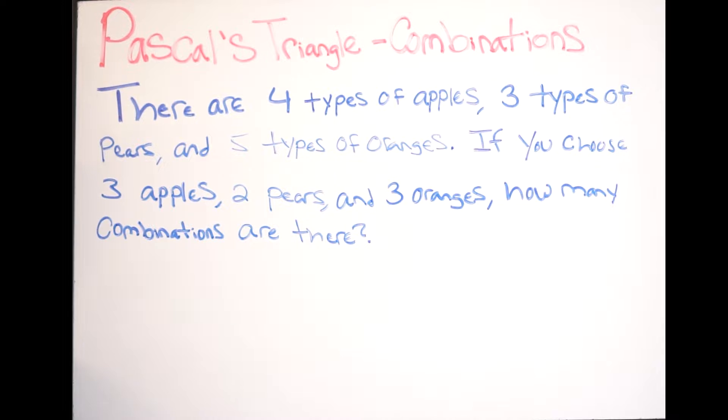When you're doing this problem, you first want to look at your total, right? So my totals occur at the beginning: I have 4 types of apples, 3 types of pears, and 5 types of oranges. So the highest I'm going up to is 5.